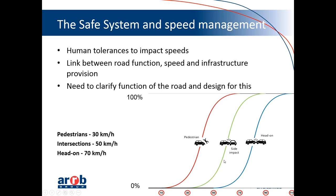We have similar figures for side impacts that typically occur at intersections — that speed is around 50 kilometres per hour. Below that speed, we can survive a side impact reasonably well; above that, the chance of death and serious injury increases dramatically. For head-on crashes, the figure is about 70 kilometres per hour for each vehicle. With modern vehicles with airbags and crumple zones, the chance of survival is quite reasonable up to about 70 km/h, but above that the chances decrease dramatically.